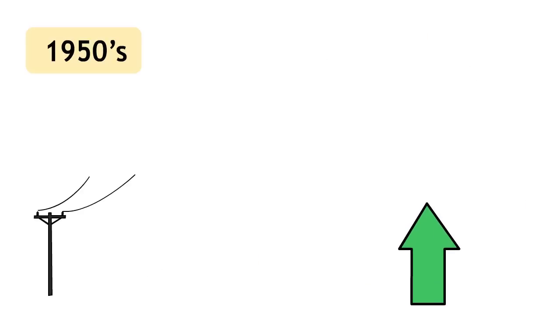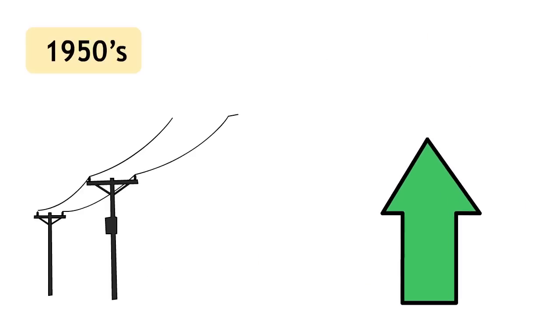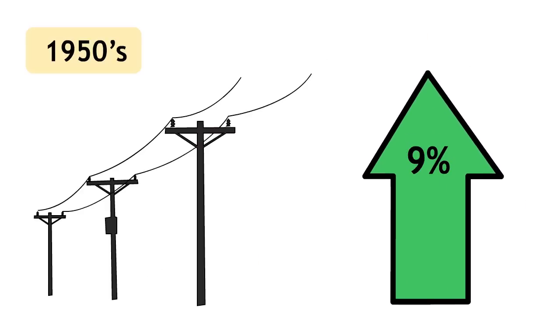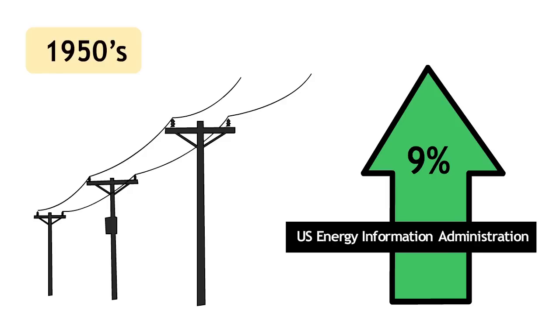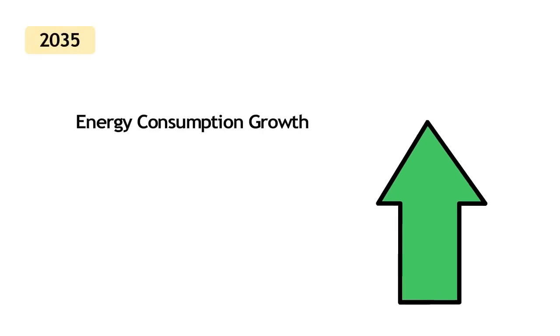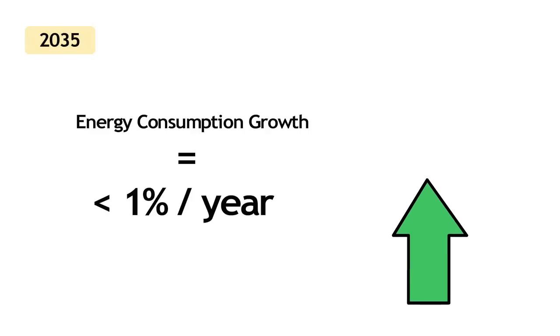During the 1950s, electricity demand grew an average of 9% a year, according to the U.S. Energy Information Administration. But over the next two decades, our electricity consumption growth rate is expected to trickle to less than 1% per year.